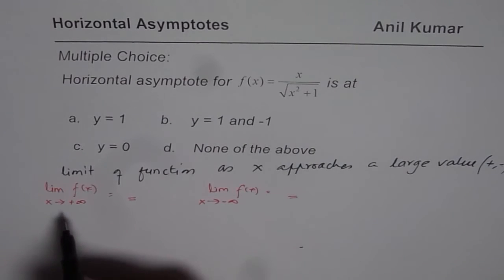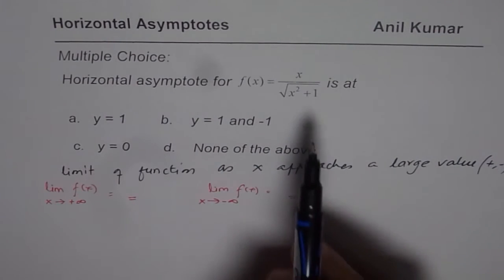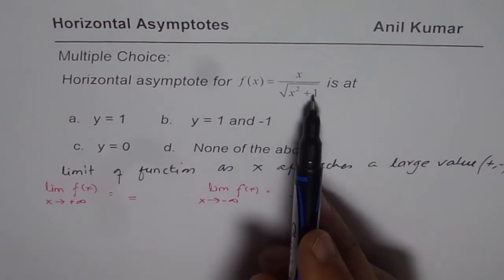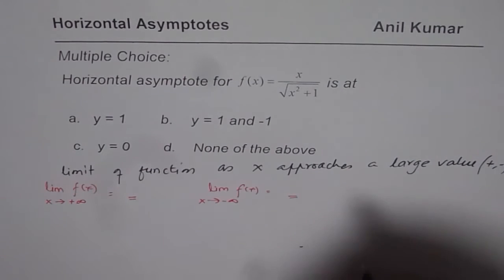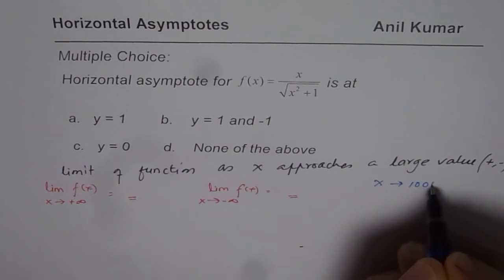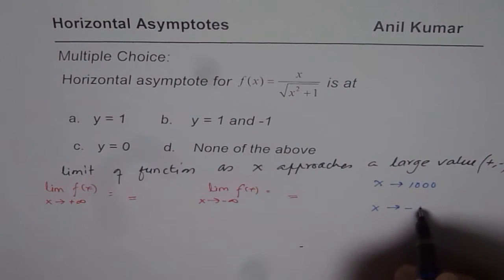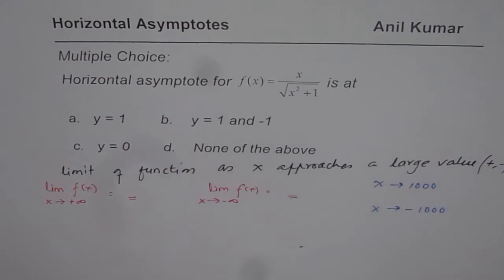So easy method is we can, as compared to one, we can take a large number. So a large number as compared to one could be, for example, 1000. So let us take x approaching 1000. That's a big number. And also x approaching minus 1000. And evaluate the value.